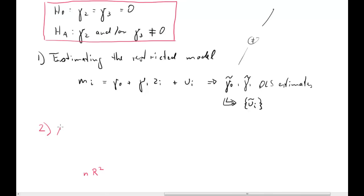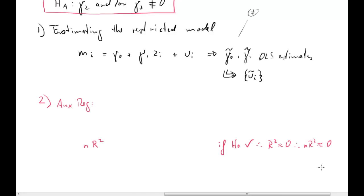We haven't said yet what the auxiliary regression is, so I'll write that down. We want that if H0 is true, then R squared should be approximately zero, and therefore the test statistic N times R squared should be approximately zero. If, however, H0 is not true, then we want R squared to be larger than zero, and therefore the test statistic N times R squared to be larger than zero.